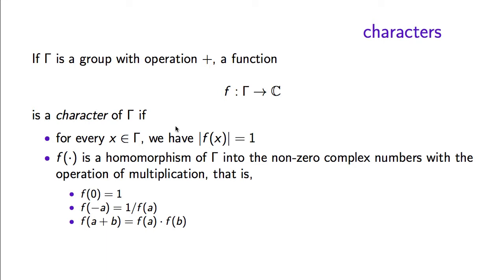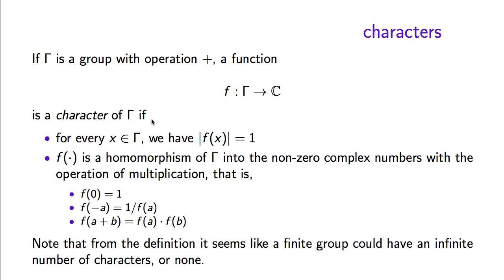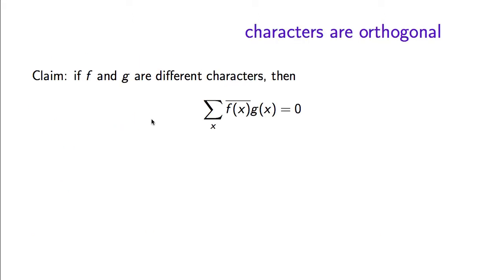A function satisfying those properties is called a character of the group. It might seem possible that a group could have no characters or infinitely many, but this is not the case for finite abelian groups. If you have a finite abelian group with n elements, there are exactly n characters. To prove there are at most n characters, we will show that characters are orthogonal: if you define the inner product of two functions in the natural way, any two different characters have inner product 0.